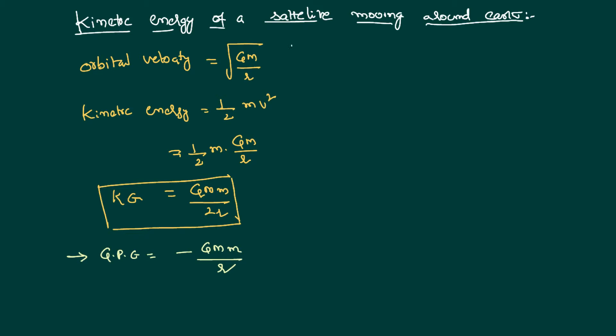We can also talk about the total energy of the system, assuming it has only these two energies. Total energy is potential energy plus kinetic energy.